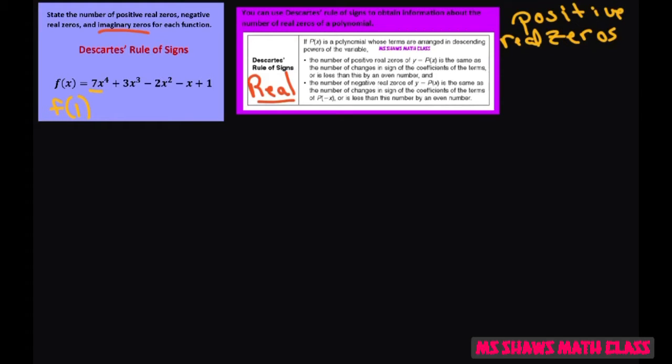And what we're going to do is get the changes in the signs of coefficients of the terms. So I'm just going to write the coefficients if I plug in 1 in all these x's. This is going to give you 7, 3, negative 2, negative 1, and 1.